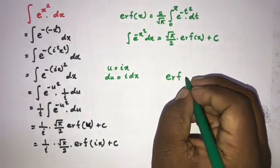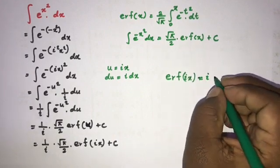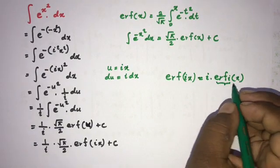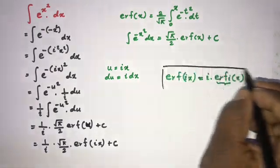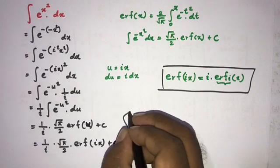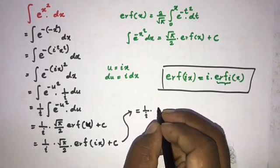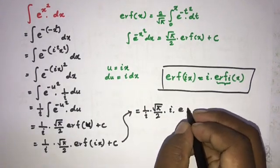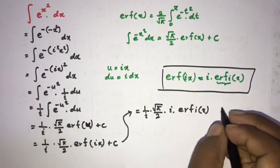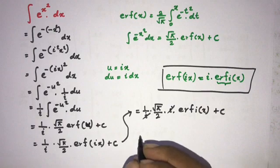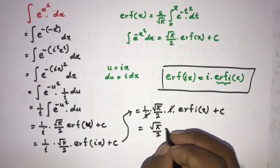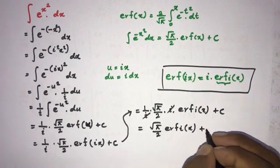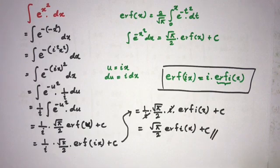Now we use the identity: erf(ix) equals i times erfi(x), where erfi(x) is the imaginary error function. Substituting this in, we get 1 over i times square root of pi over 2 times i times erfi(x) plus c. The i cancels, giving the final answer: square root of pi over 2 times erfi(x) plus c. If you like this video, please subscribe to the channel. Thank you for watching.